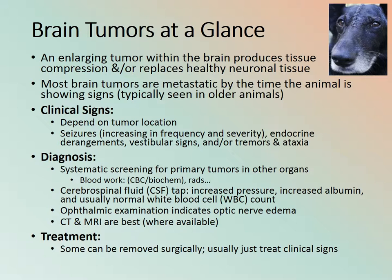Diagnosis involves systematic screening for primary tumor in other organs via blood work and radiographs, cerebrospinal fluid tap showing increased pressure, increased albumin, and usually normal white blood cell count, ophthalmic examination indicating optic nerve edema, and CT or MRI available at specialty clinics. Treatment may include surgical removal, but we usually just treat the clinical signs.